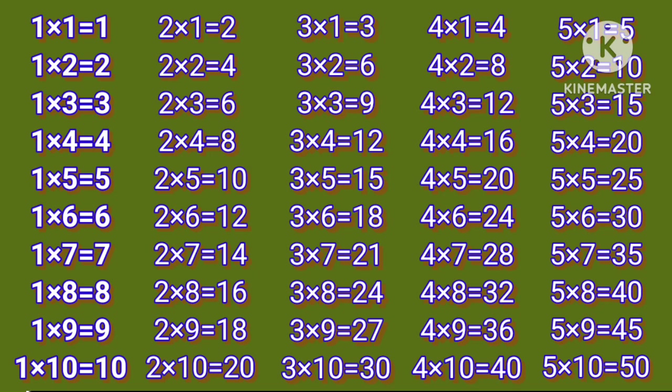3 1s are 3. 3 2s are 6. 3 3s are 9. 3 4s are 12. 3 5s are 15. 3 6s are 18. 3 7s are 21. 3 8s are 24. 3 9s are 27. 3 10s are 30.